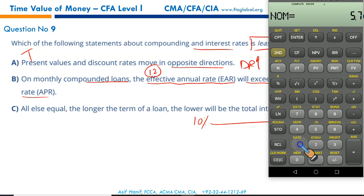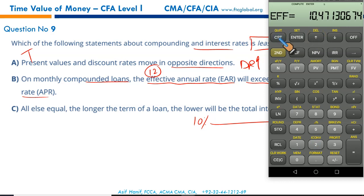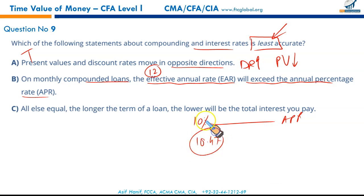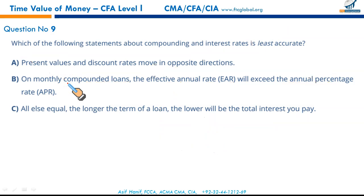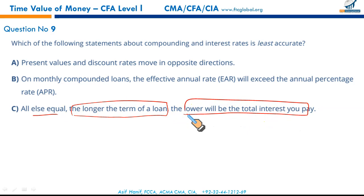A is correct, B is correct, so it must be C. Statement C: 'all else equal, the longer the term of the loan, the lower will be the total interest you pay.' This is wrong — longer terms carry maturity risk requiring compensation, so longer loan terms mean higher total interest paid. Shorter loans mean less interest — common sense. Statement C is incorrect, making C the answer.